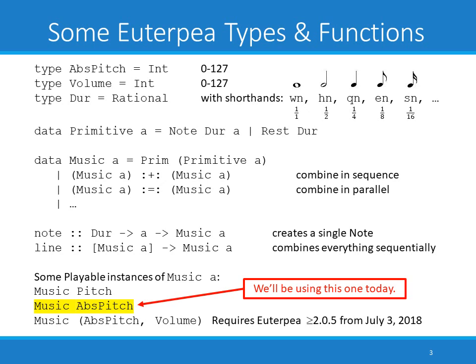Traditionally Euterpe used the Music Pitch data type, where every note leaf node had a duration and a pitch tuple. We're not going to deal with the pitch type today. Instead we're going to deal with AbsPitch, which is a little easier for non-musicians to work with since there are fewer type conversions and less music terminology involved. So a note will contain a duration and an AbsPitch. The note function takes a duration and an A — in our case an AbsPitch — and produces a music value. The line function composes a list of music values in sequence. So if you have a list of numbers as AbsPitch values, you can map note with a duration across them and then use line to create a melody.